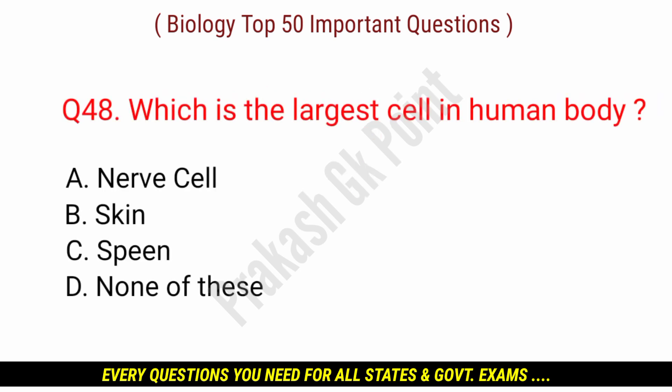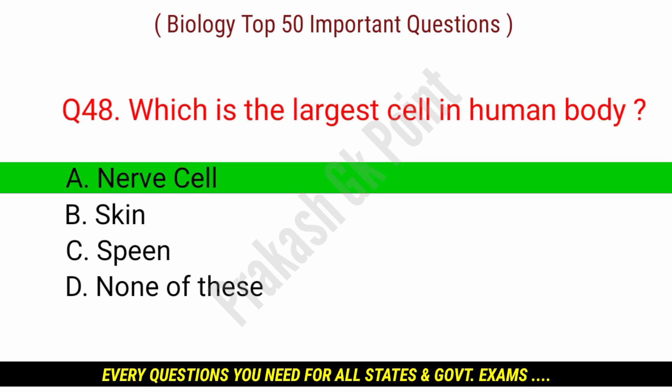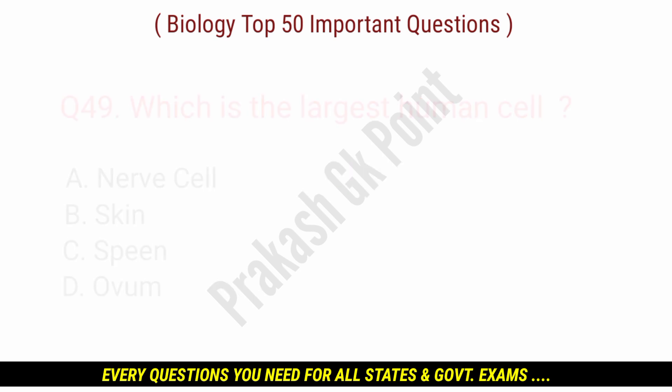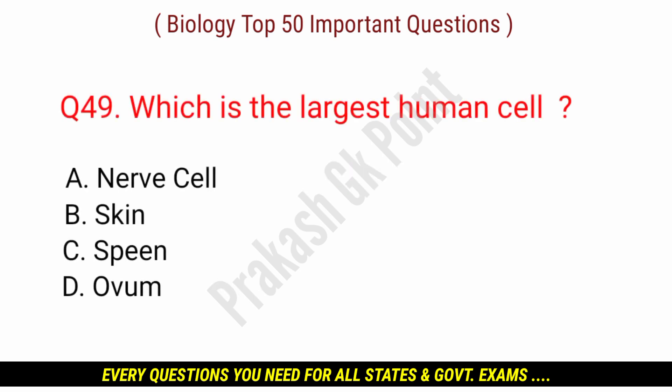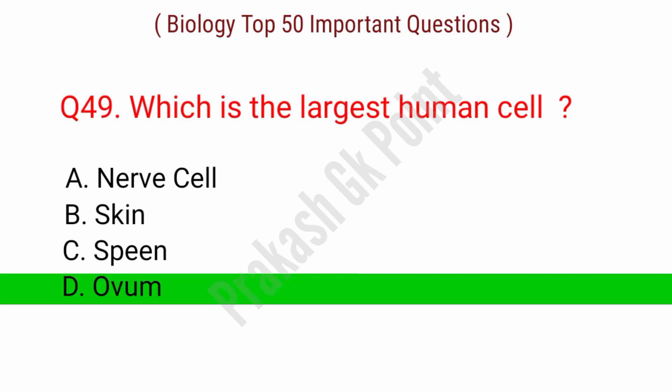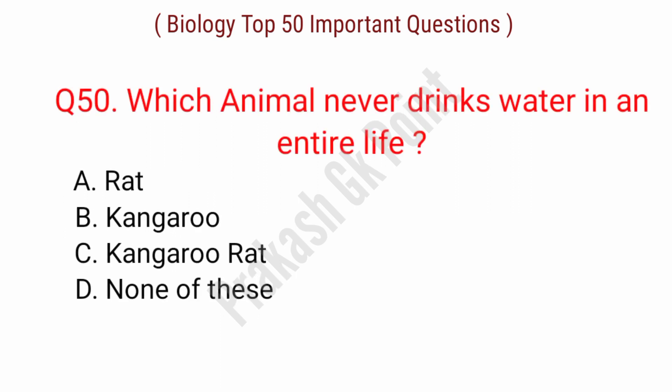Which is the largest cell in the human body? Answer: option A — Nerve cell. Next question: which is the largest human cell? Answer: option D — Ovum.